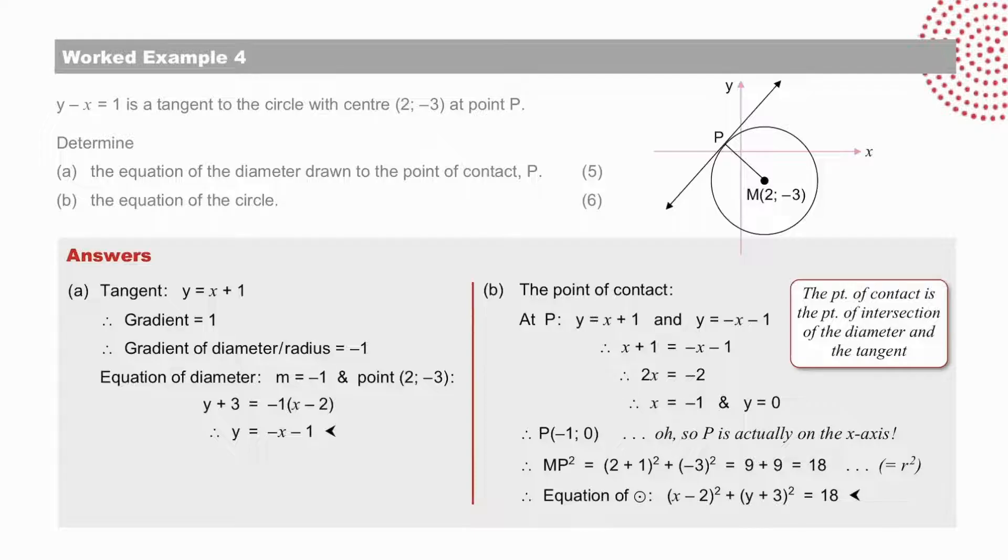Noting that, so, P is actually on the x-axis, since the y coordinate is 0, which is not truly reflected by our drawing. But our drawings are not meant to be that accurate. So, r squared then equals MP squared equal to 18. And the equation of this circle, if we substitute our center 2 minus 3, we find the equation of the circle to be x minus 2 all squared plus y plus 3 all squared equal to 18.